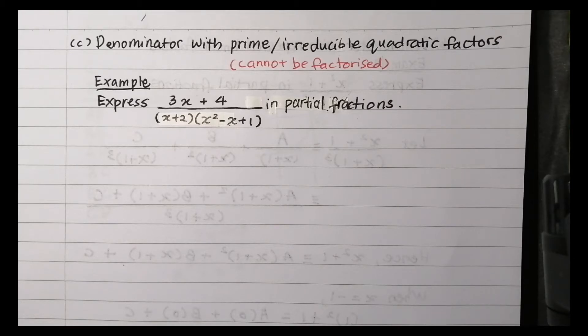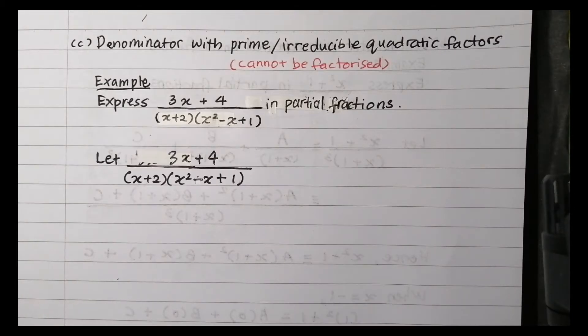Now look at an example. Then we start with: Let the given rational function be identical to the sum of two rational functions with denominator X plus 2 and X squared minus X plus 1.